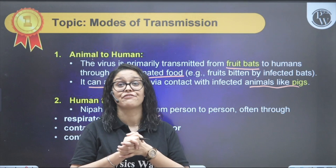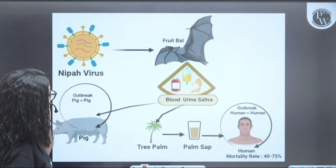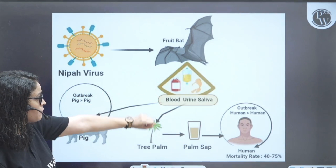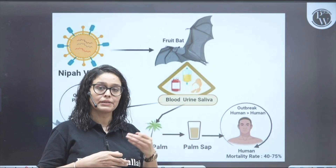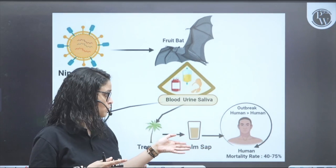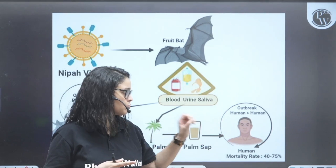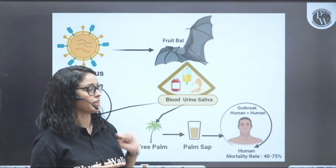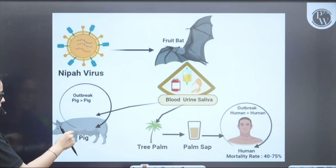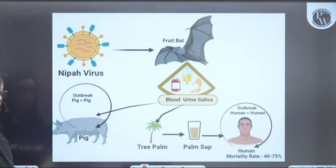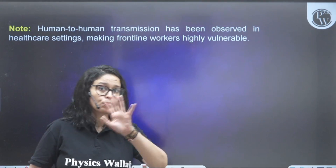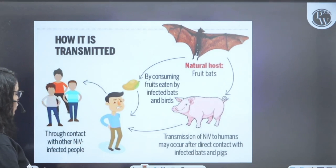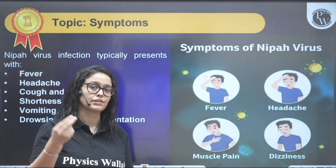Nipah is highly contagious and more dangerous than coronavirus. It spreads from fruit bats via their blood, urine, or saliva — particularly from palm trees where people consume date palm juice or sap. Pig-to-pig and pig-to-human transmission also occurs. Human-to-human transmission through droplets makes the spread extremely fast.